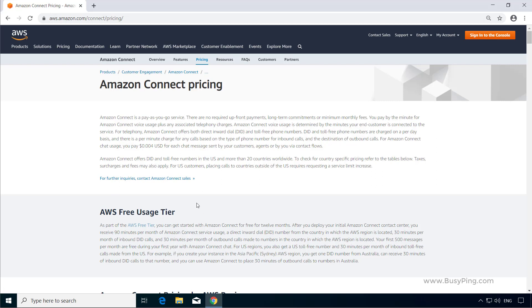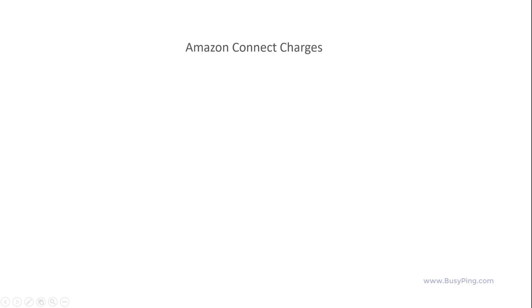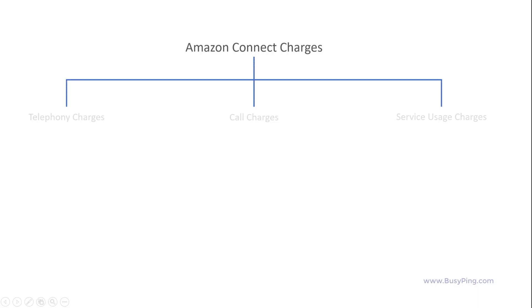There is quite a lot of information here, so let me break it down for you. Amazon Connect primarily has three different types of charges: telephony charges, call charges, and service usage charges.